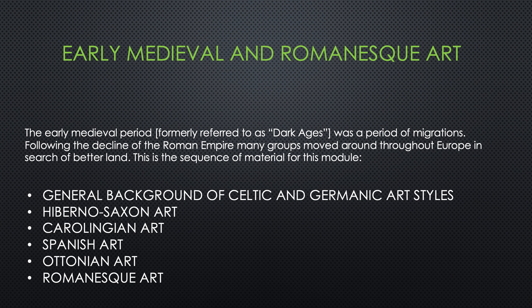The early medieval period, formerly referred to as the Dark Ages, was a period of migrations following the decline of the Roman Empire, where many groups moved around throughout Europe in search of better land. The sequence of material for this module includes a general background of Celtic and Germanic art styles, then Hiberno-Saxon art, Carolingian art, Spanish art, Ottonian art, and finally Romanesque art.